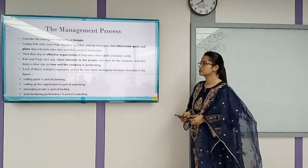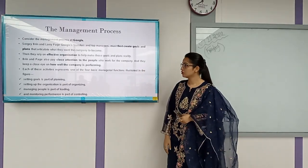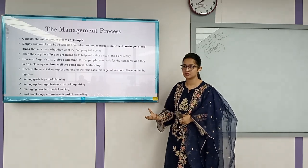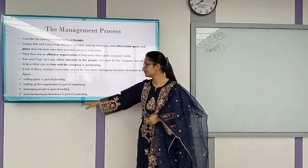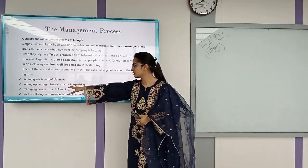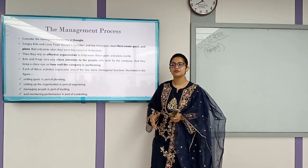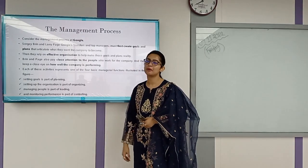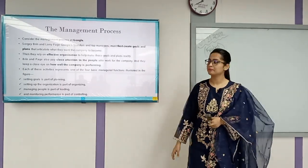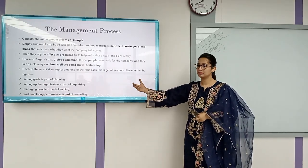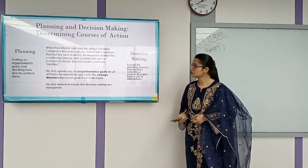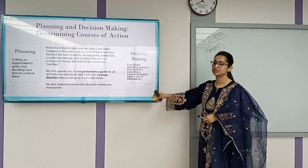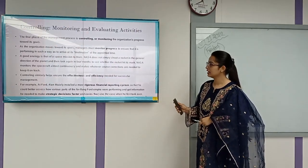This management process is also seen in real organizations, like Google. Larry Page, the founder of Google, used this same basic management process: first setting a goal (planning), then setting up organizing — what resources are needed — then managing people (leading), and then monitoring performance (controlling). Even if different names are used, these parts exist in every big organization.